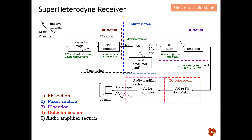That is the key purpose of the detector section. Next, before we can play the sound or voice through the speaker, we need the audio amplifier to boost the signal large enough to drive the speaker. In summary, the superheterodyne receiver has five main sections: the RF section, mixer section, IF section, detector section, and audio amplifier section.